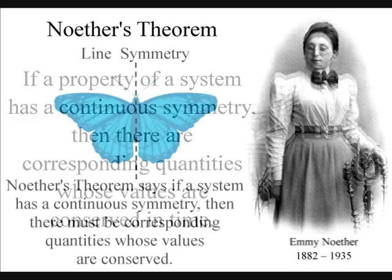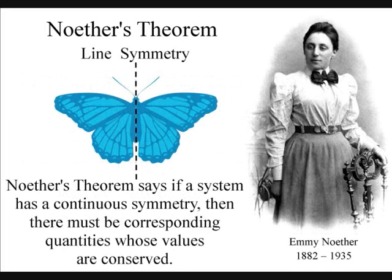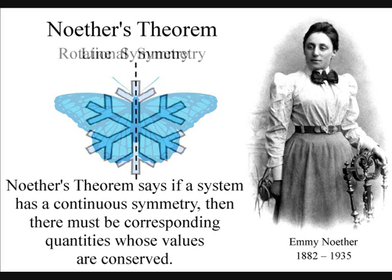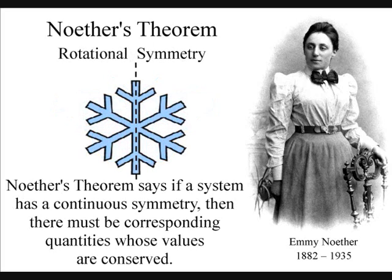This is easier to understand than you think, because symmetry is based on geometry and comes in simple forms. We have line symmetry or mirror symmetry, and we also have rotational symmetry.